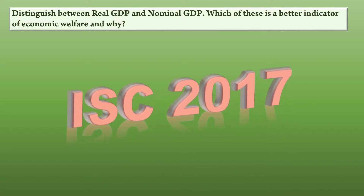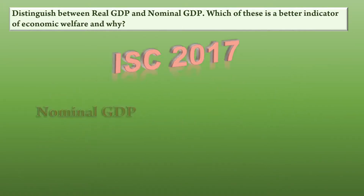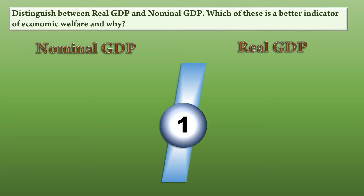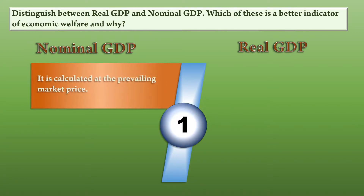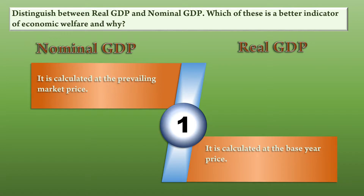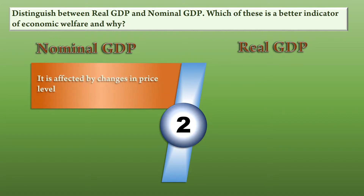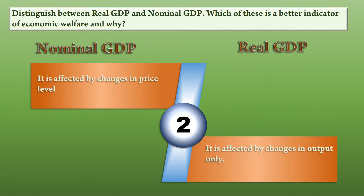We have Nominal GDP on the left hand side and Real GDP on the right hand side. First, Nominal GDP is calculated at the prevailing market price. Real GDP is calculated at constant base year prices. Second, Nominal GDP is affected by changes in the price level, while Real GDP is affected by changes in output only.